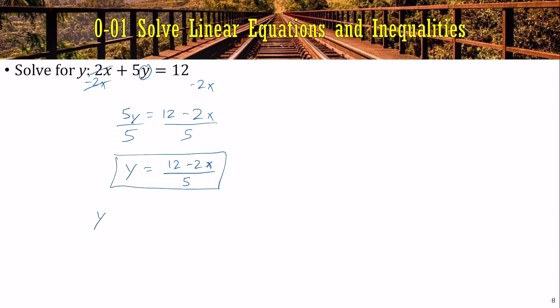If you wanted to, you could write that as 12 over 5 minus 2 over 5x. That's the same thing.